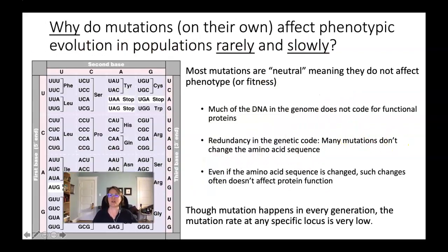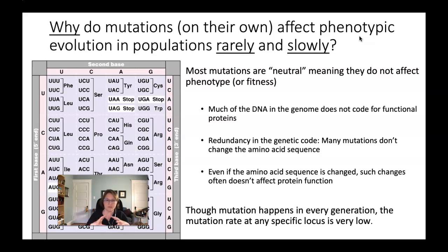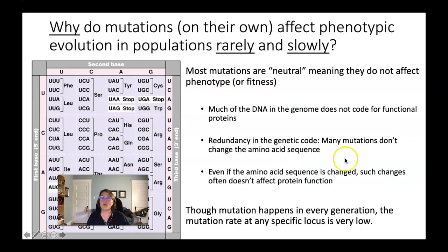I want to talk about why mutations affect phenotypic evolution so rarely and so slowly. A lot of this is based on the redundancy of the genetic code. Most mutations are neutral — they do not affect the phenotype of the mutant. If they don't affect the phenotype, they also cannot affect the fitness of the individual. So we're talking about evolutionary change that is genetic change, but it doesn't affect fitness or phenotype at all — that's what I mean by neutral evolution.